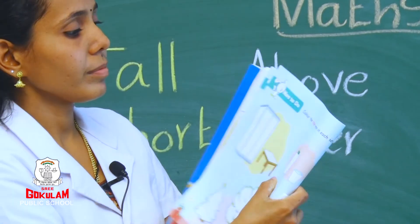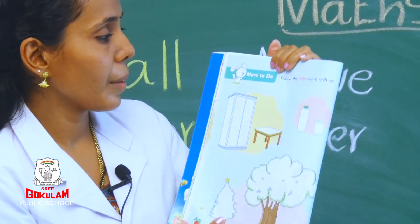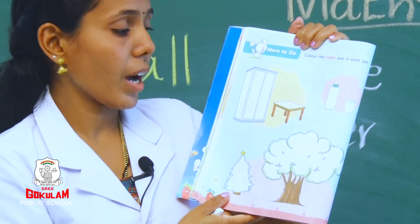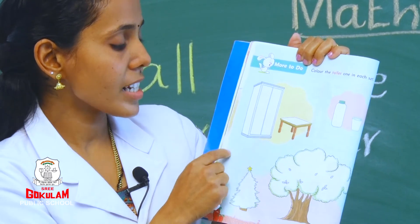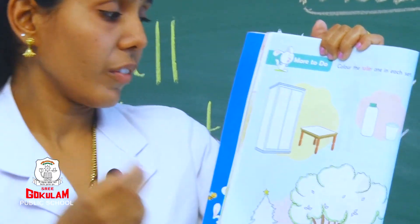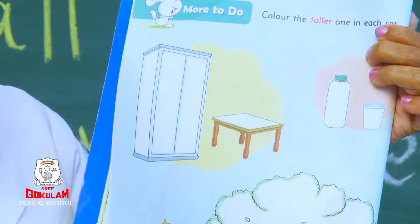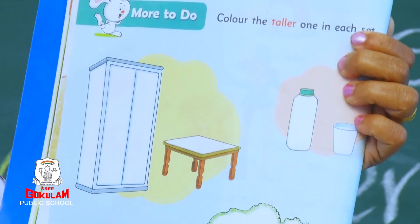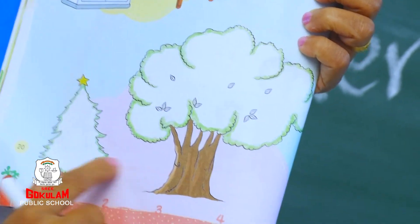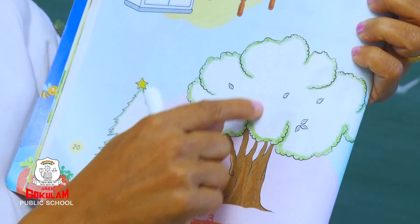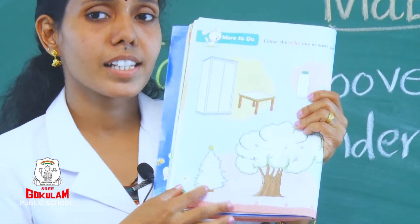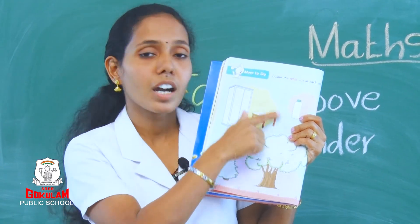Turn the page. Colour the taller one in each set. See the shelf and table — which one is taller? Yes, the shelf is taller, so we can colour the shelf. Next is a bottle and a glass — which one is tall? The bottle is tall, so colour the bottle. There are two trees — which one is tall? Yes, this one is tall, so we can colour this tree. Colour the taller ones neatly.